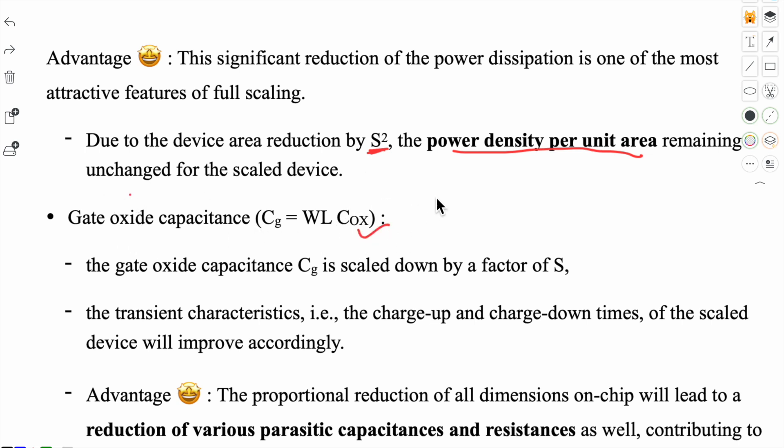Gate oxide capacitance formula is C_g = W × L × C_ox. Here C_ox increases by factor S, W is scaled down. If we write C_g dash as W dash × L dash × C_ox dash, where W dash is W by S, L dash is L by S, and C_ox dash is S times C_ox. Solving this, we get W × L × C_ox upon S. So we can see that C_g dash is scaled down by factor S. And if gate oxide capacitance is reducing, this will give advantage in transient behavior. The time taken for charge up and charge down is reduced considerably, and this transient behavior improvement significantly improves performance. This is another advantage of constant field scaling.